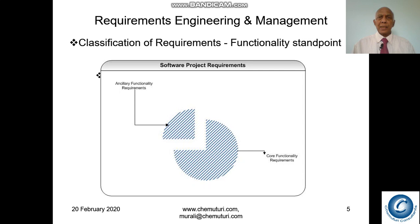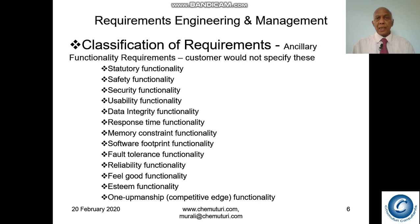Here is the pictorial representation. This is the ancillary functionality and this is the core functionality. The relation shown is 25/75, but it need not always be the same — it may change from situation to situation.